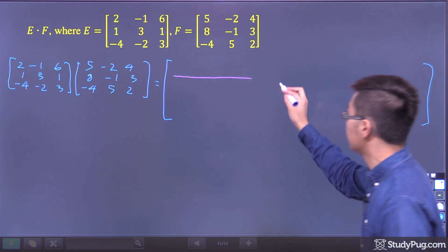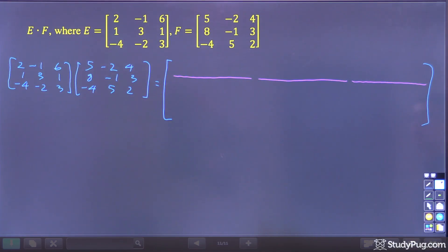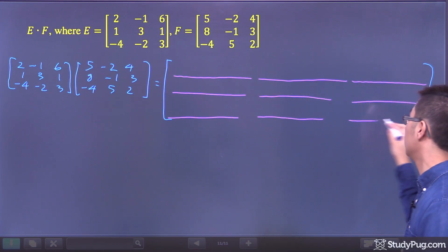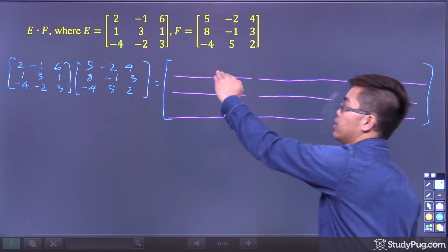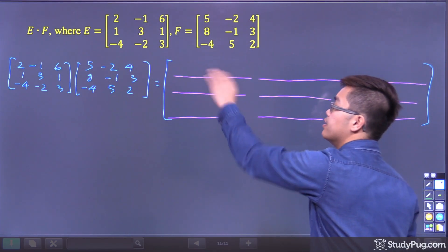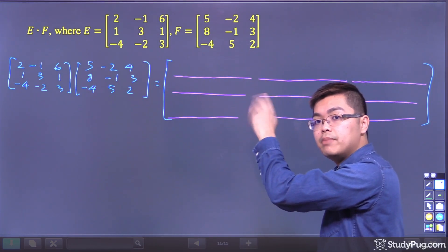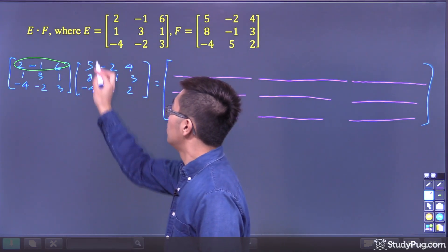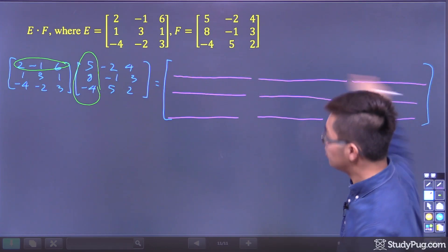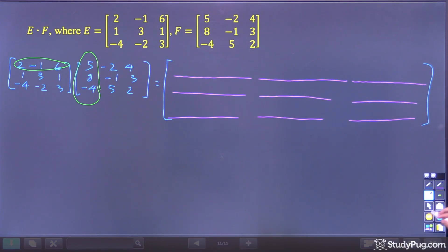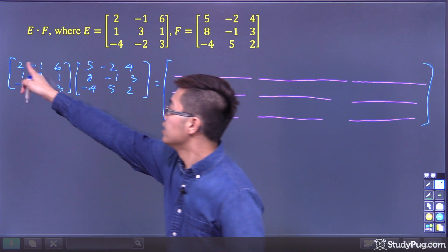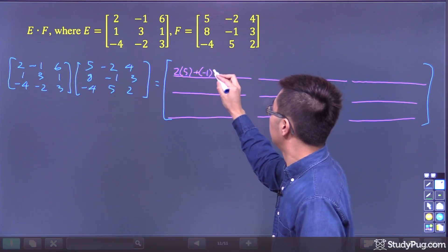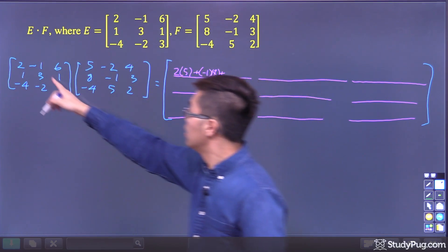We have 9 entries to calculate. Let's take a look at the first entry, which is in the first row and the first column of the result matrix. To find it, we take the dot product of the first row of E and the first column of F. That gives us: 2 times 5 plus negative 1 times 8 plus 6 times negative 4.